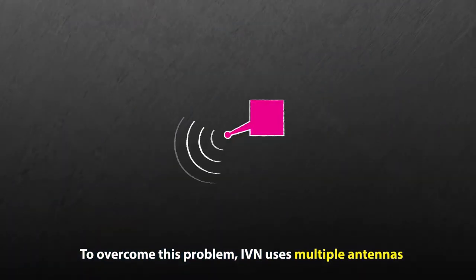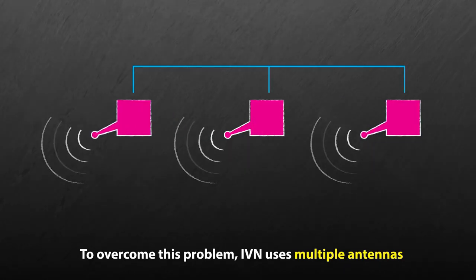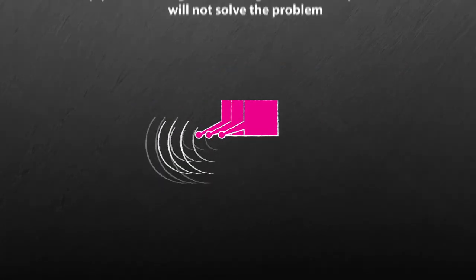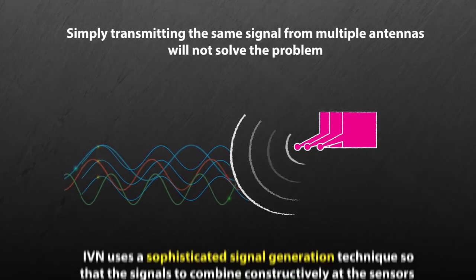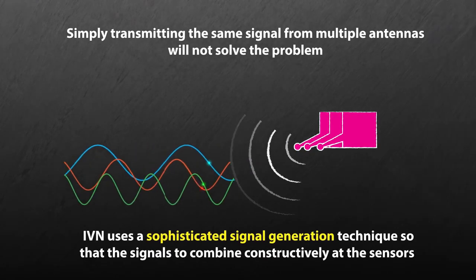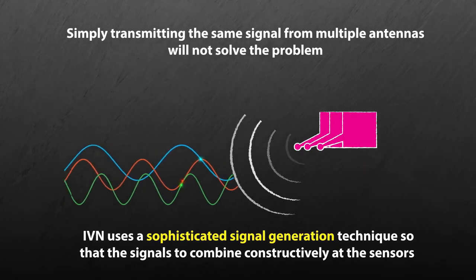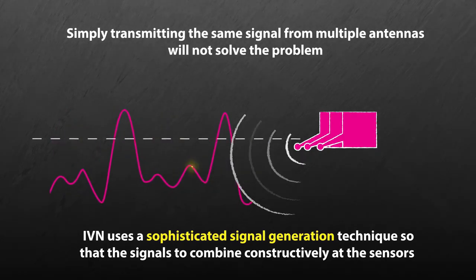To overcome this problem while transmitting signals that are safe for humans, IVN uses multiple antennas. But simply transmitting the same signal from multiple antennas will not solve the problem. IVN uses a sophisticated signal generation technique that allows the signals to combine constructively at the sensors.